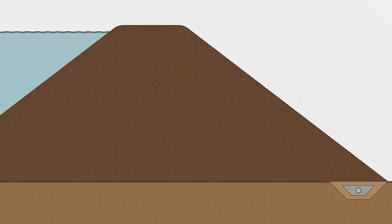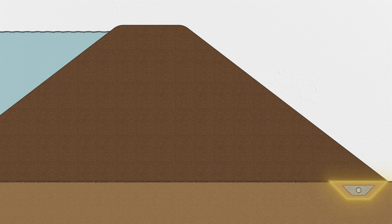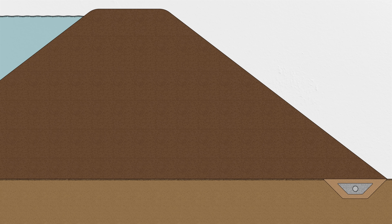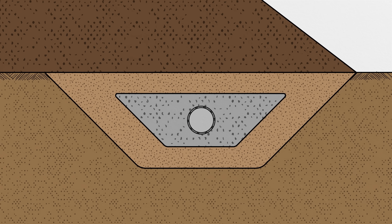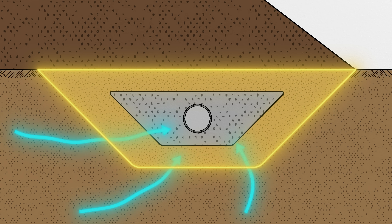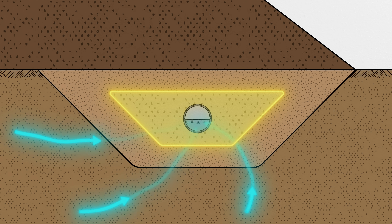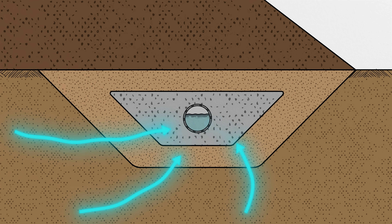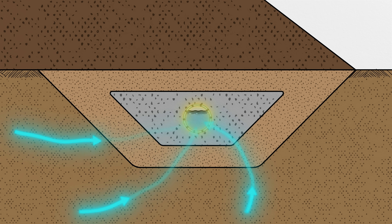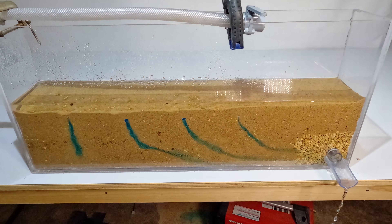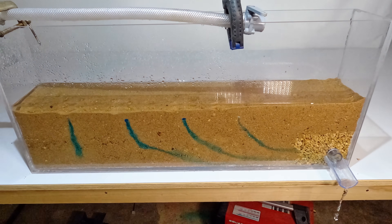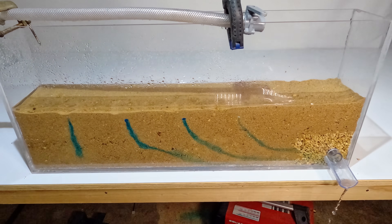For dams, you can often get either the filtration you need or the capacity to let water through, but not both in the same material. So lots of dams use two-stage filters. The first stage filters the base soil material. The second stage filters the first stage but lets the water flow more freely. Then you put a perforated pipe in the middle to get the water out of the drain as quickly as possible. So they basically look identical to the demonstration I built: sand, then gravel, then pipe.